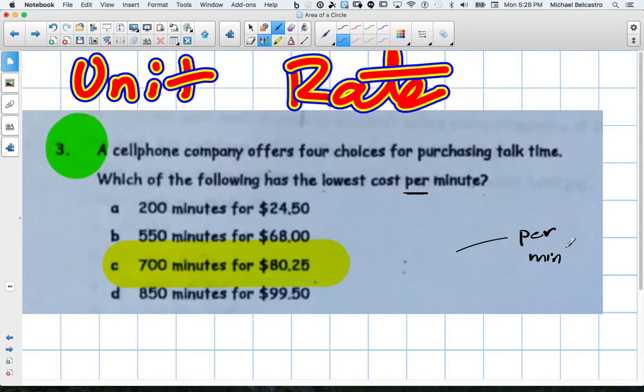So because it's per minute, that means minutes is on the bottom. And whatever number is before per, that would be the number on top. So it's cost. So think of it like we put our dollar sign, and this line here also means division, right? So it's dollars divided by minutes.